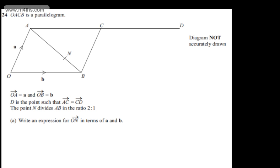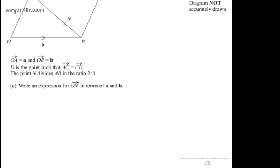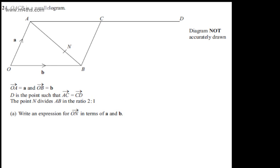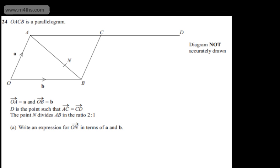In part A, we're asked to write an expression for the vector ON in terms of a and b. The question carries three marks. So if I want to go from O to N, I can go from O to A and then A to N. What I'm going to write then is that the vector ON will be equal to the vector OA plus the vector AN.